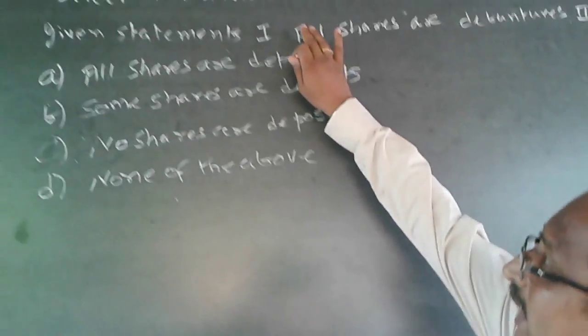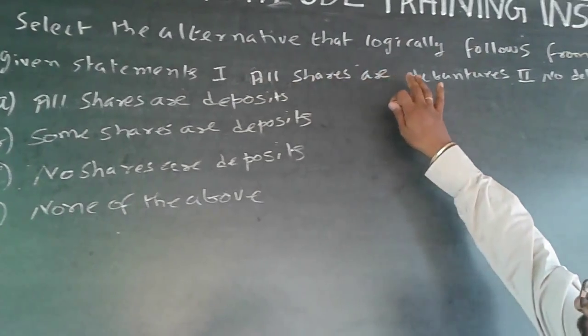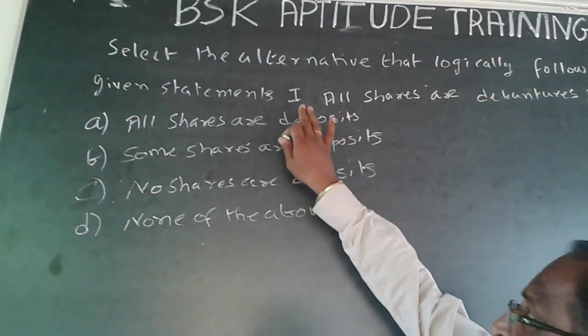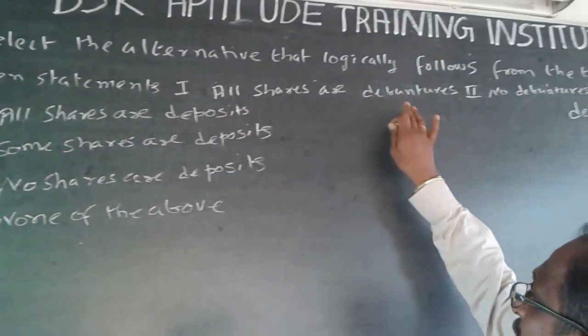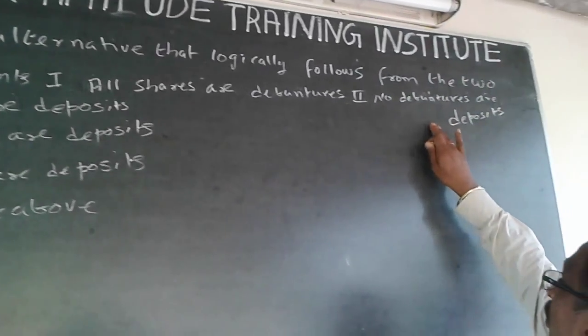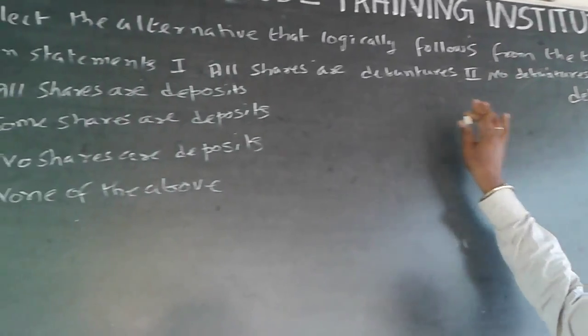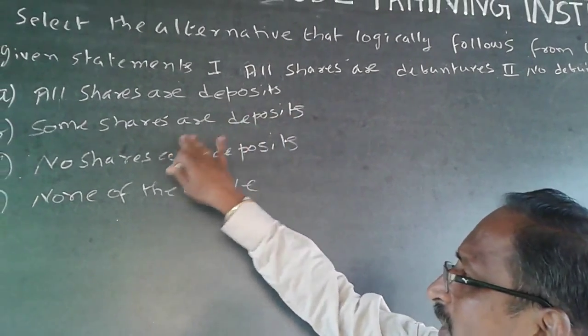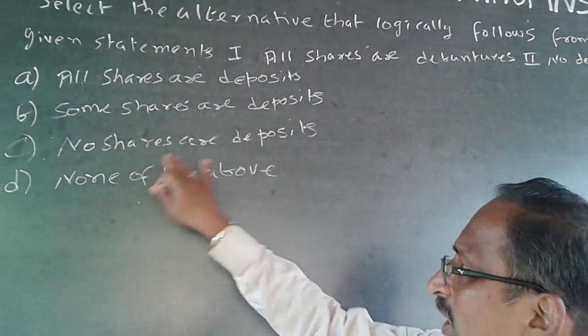So the question is select the alternative that logically follows from the two given statements. One: all shares are debentures. Two: no debentures are deposits. The options are: A) all shares are deposits, B) some shares are deposits, C) no shares are deposits, and D) none of the above.